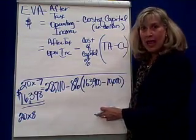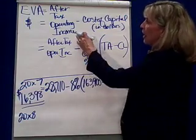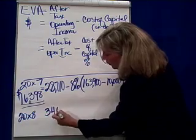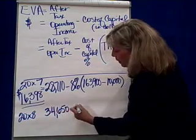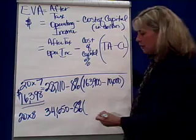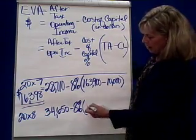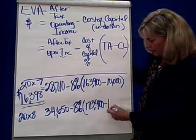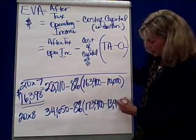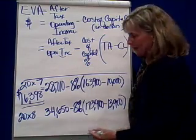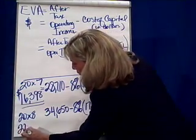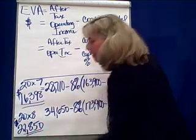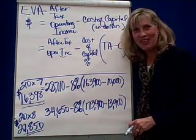In 2008, after-tax operating income is $34,650. Cost of capital is again 8%. Total assets at end of year are $173,900, and current liabilities at end of year are $13,900. The EVA — the value added by this manager's actions — comes out to $21,850.